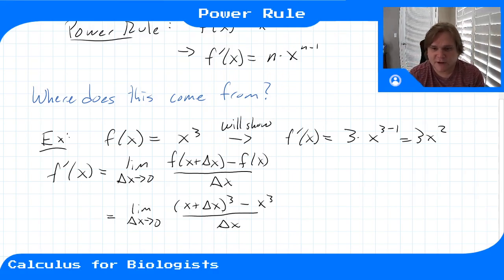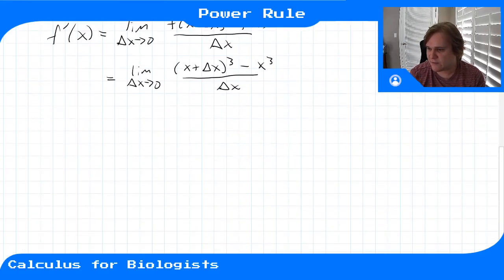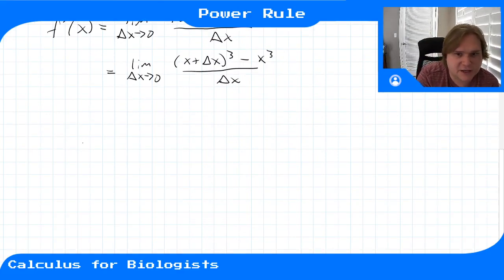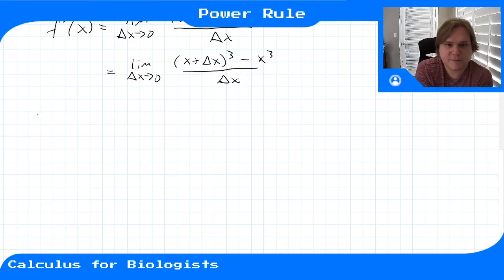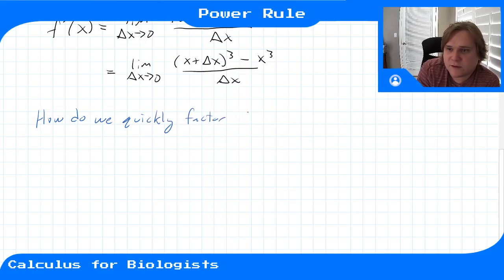In order to calculate the derivative, we'll need to factor out this cubic term. And here's where I'll introduce a nice trick that will help you factor out these giant cubes and giant factors of anything like this. So how do we quickly factor x plus y cubed?